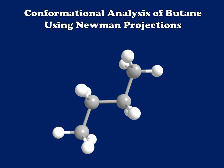Now butane is a pretty typical hydrocarbon for you to encounter during the early stages of your organic chemistry course, and it's ever so slightly more complex than ethane in the sense that it doesn't have just six hydrogen substituents around its central carbon atoms, but rather four hydrogens and two methyl groups. And that adds a whole new level of complexity to its conformational analysis.